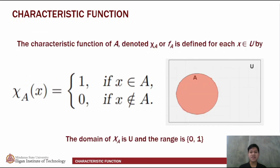The characteristic function of A, denoted with a capital letter X and a subscript A, or a small letter f and a subscript A, is defined for each x that is an element of U, the universal set, by having this read as: the characteristic function of an element x in a given set A, which has two possible outputs: 1 if x is an element of A, and 0 if it's not.